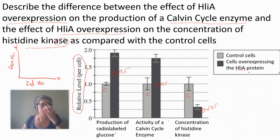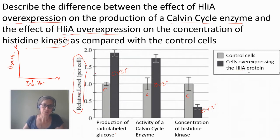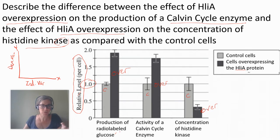The dependent variables are really the radiolabeled glucose, the Calvin cycle enzyme, and the histidine kinase. The independent variables would be which cells you're using and maybe how much of the HLiA protein is overexpressed. There's no actual unit for this — we're just comparing overexpressed cells to control cells. Notice how the control is at 1 for all three, because the number of molecules differs between each measurement type.